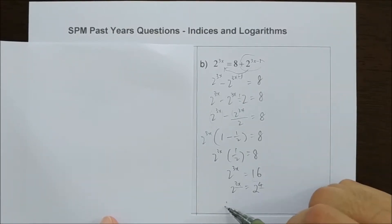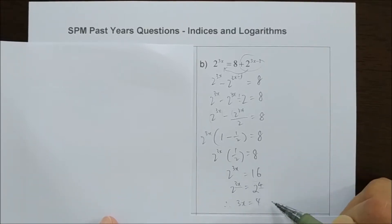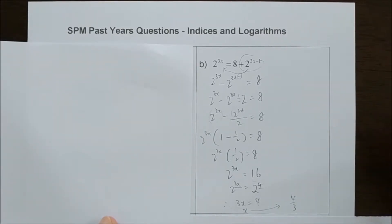So 16 is actually 2 to the power of 4. By comparison, 3x equals 4. Hence, x equals 4 over 3.